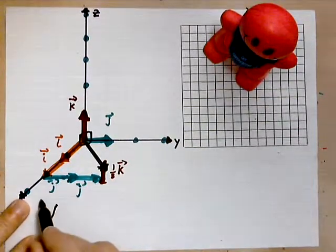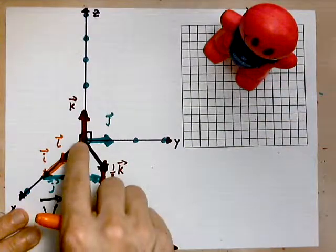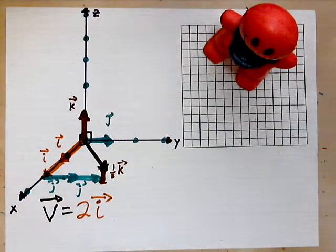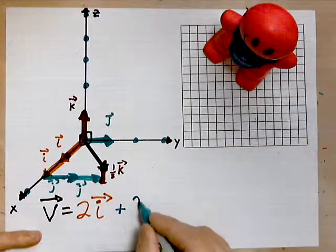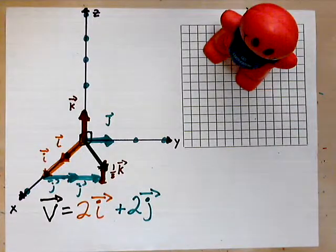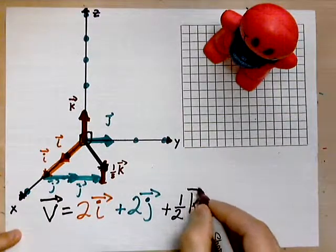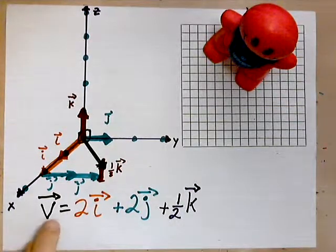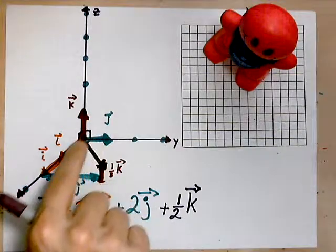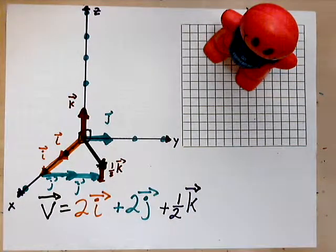Let's write that vector. The vector v can be expressed as — make it big and bold: v equals how many i's? Count them — one, two — so it's two i's. How many j's? Count them — one, two — it's two j's. How many k's? About half a k. So add that in — that's your one-half k. What we have just done is expressed the vector v as a combination of the vectors i, j, and k: two i's, two j's, and about half a k.